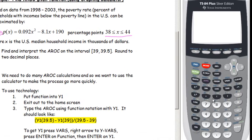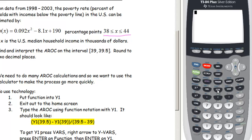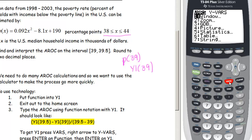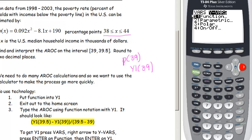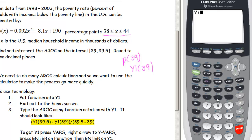Y1 can be used like function notation. For instance, to find p at 39, you can compute Y1 of 39. To get Y1, press the VARS key, right-arrow over to Y-VARS, select function variables, then select Y1. Put parentheses with 39 inside. This tells us that when the median household income is $39,000, the poverty rate is 14.032% — meaning 14.032% of households are below the poverty line.